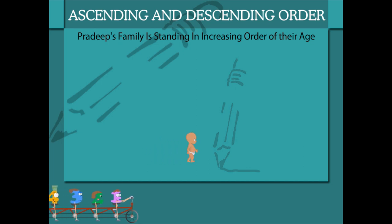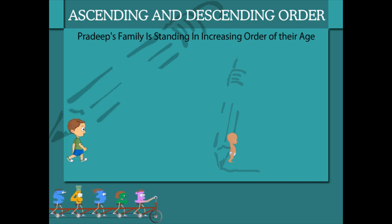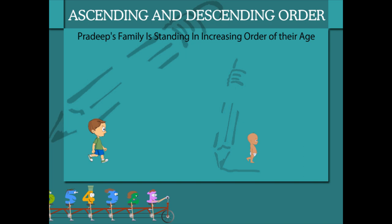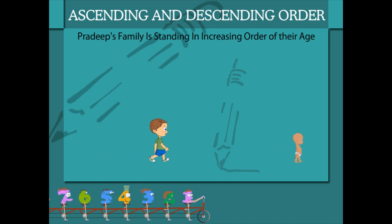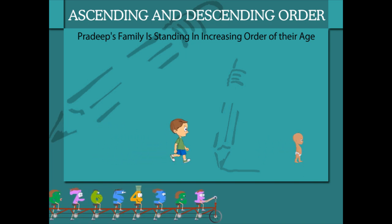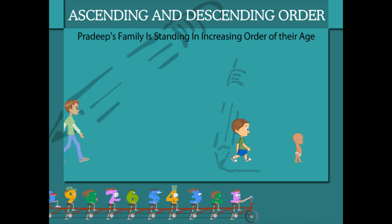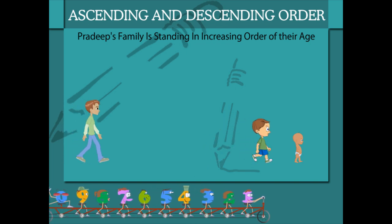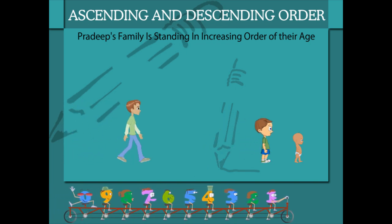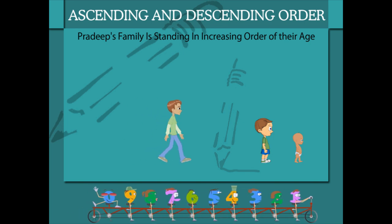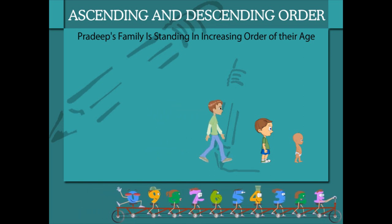Here is Pradeep's youngest brother. He is 2 years old. Walking behind is Pradeep. He is 7 years old. After him comes Pradeep's elder brother. He is 12 years old.